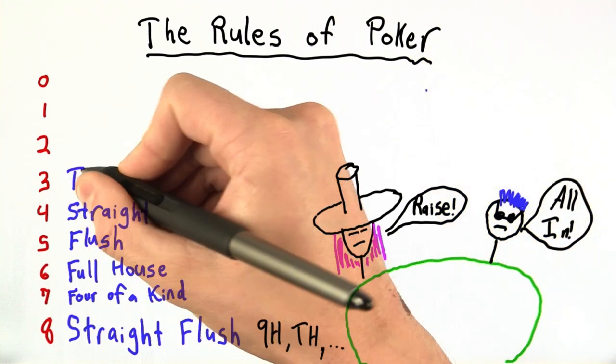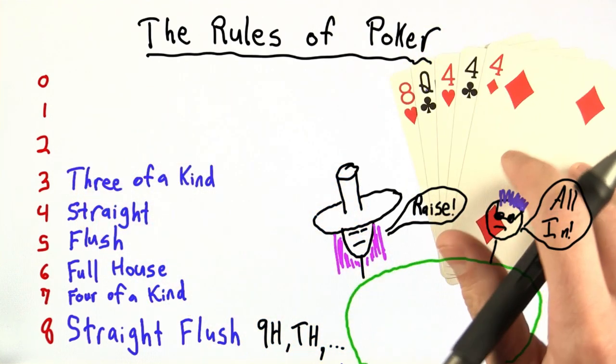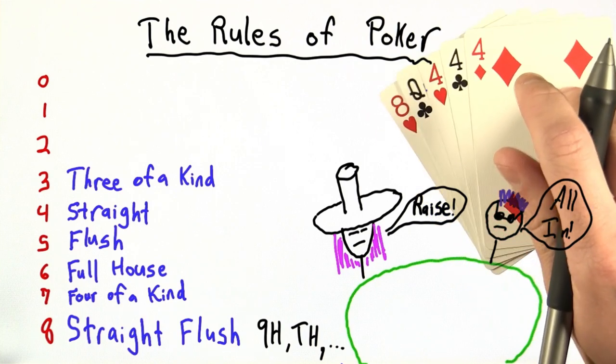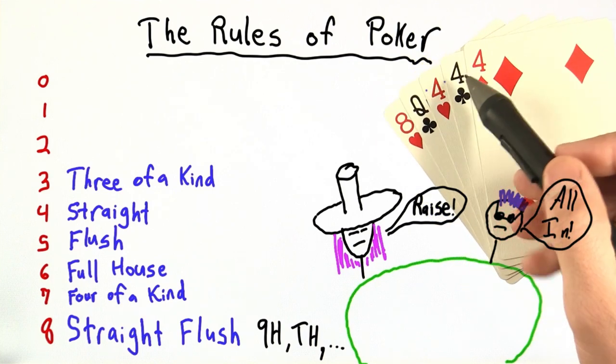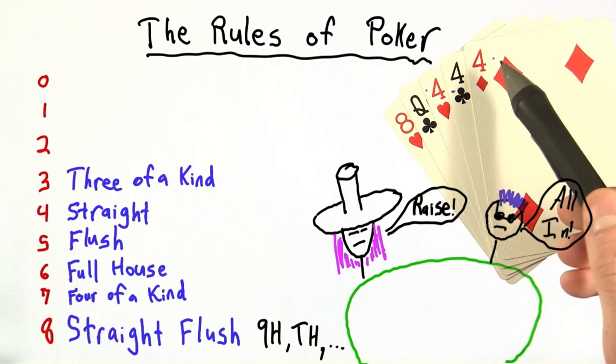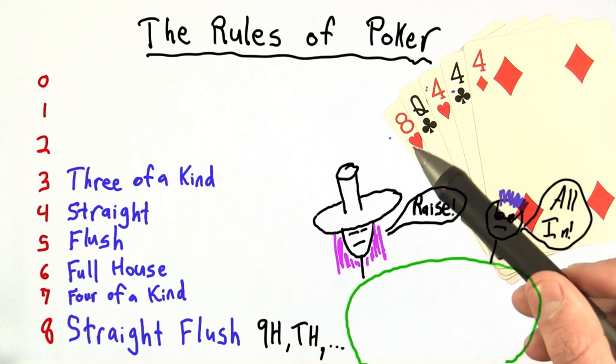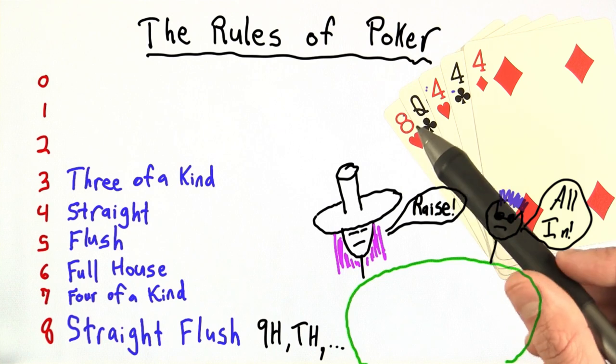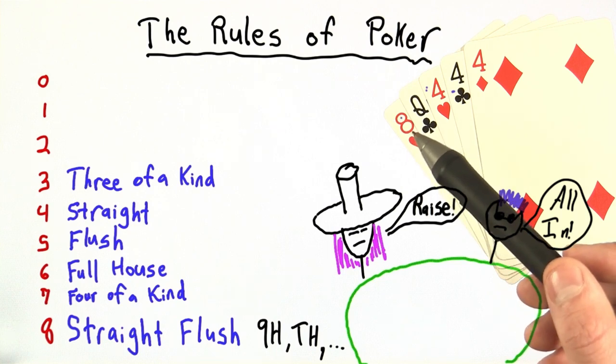Our next hand is the three of a kind. And three of a kind is just three cards of the same rank. So here, these three fours are what's relevant. The queen and the eight, again, in some special circumstances where we're playing with multiple decks, they may be used to break a tie. And again, we'll talk about that in class.